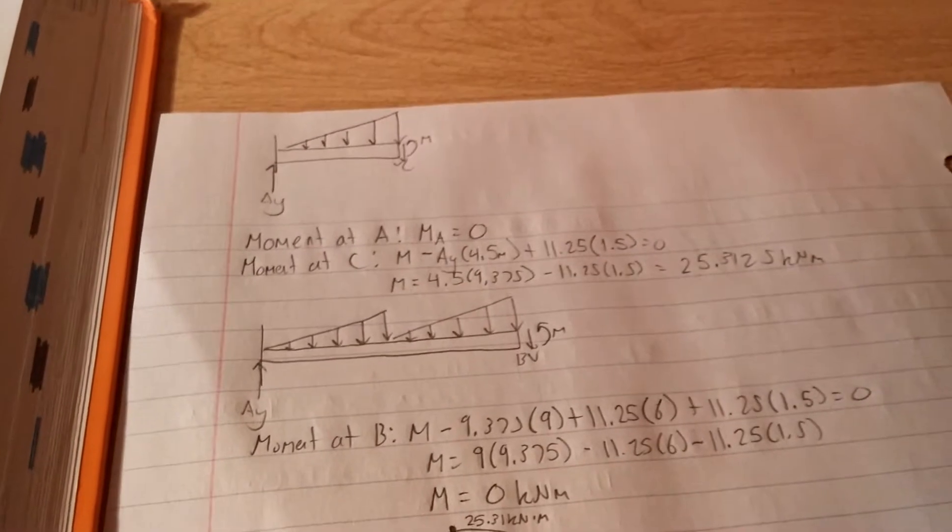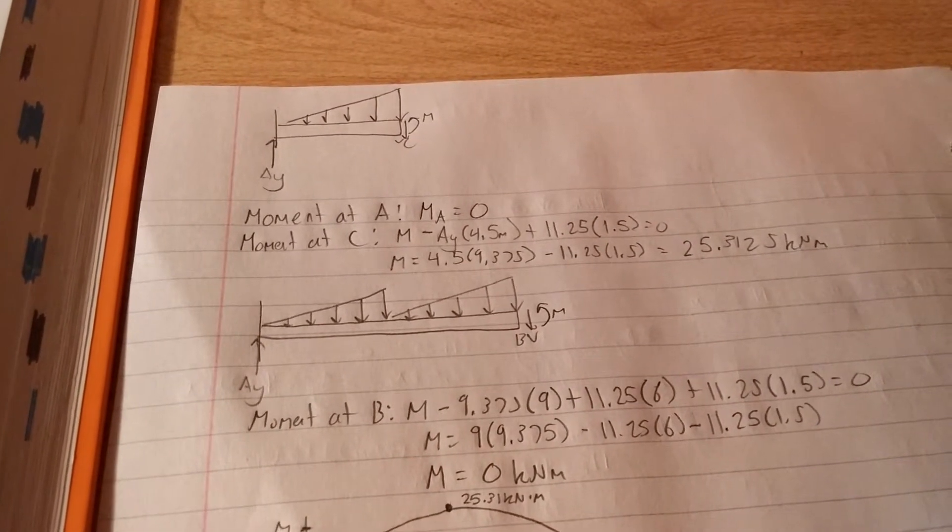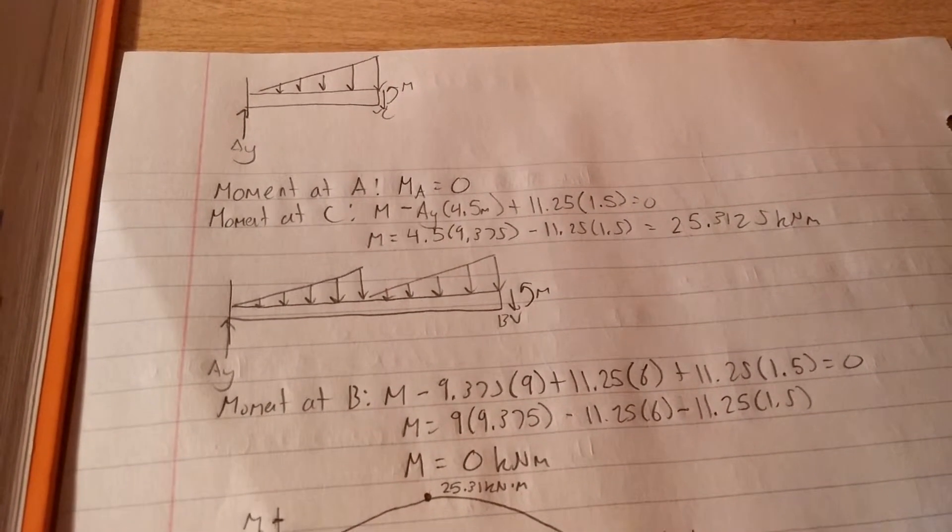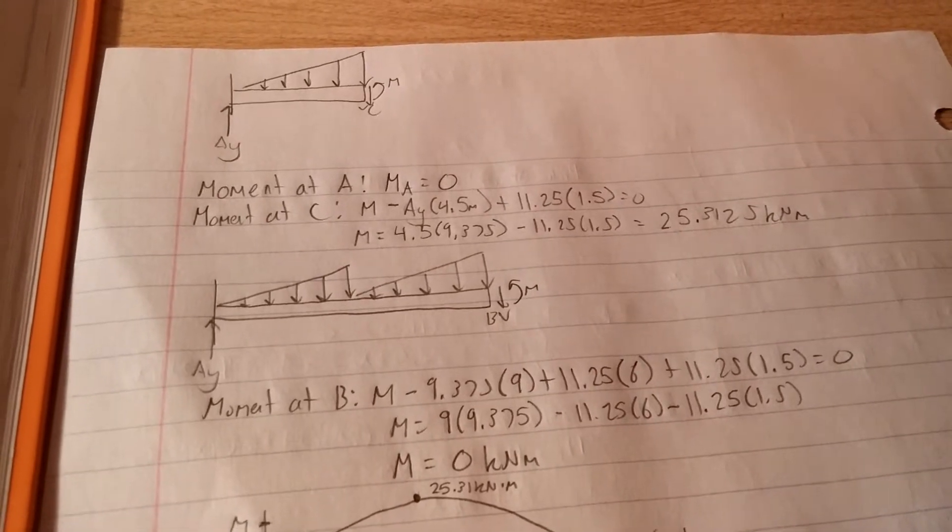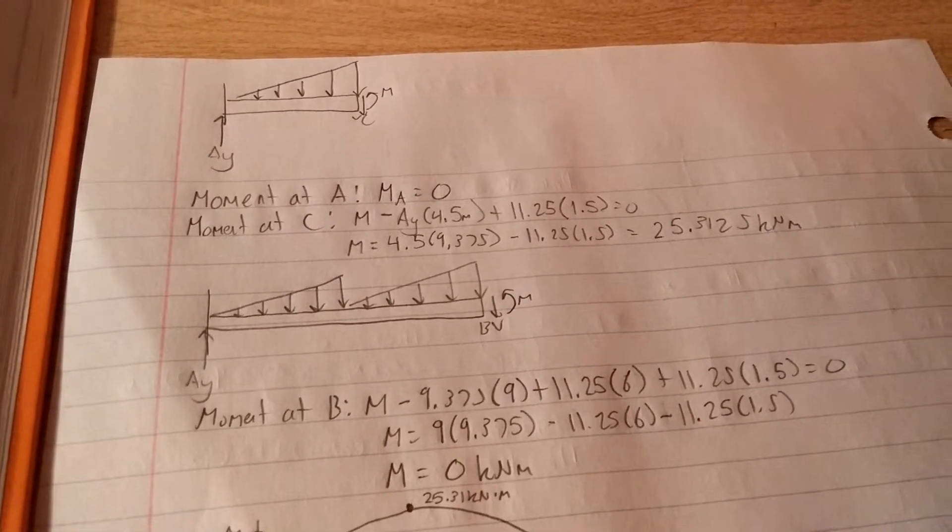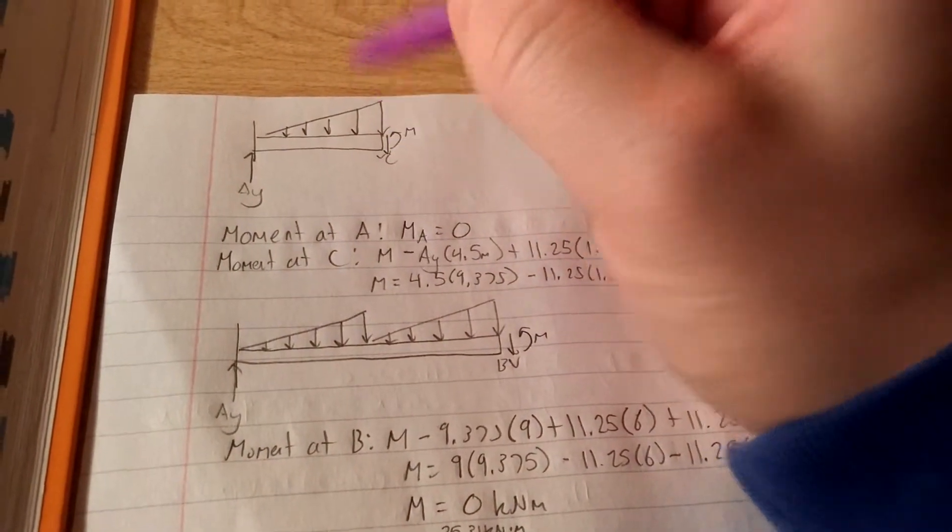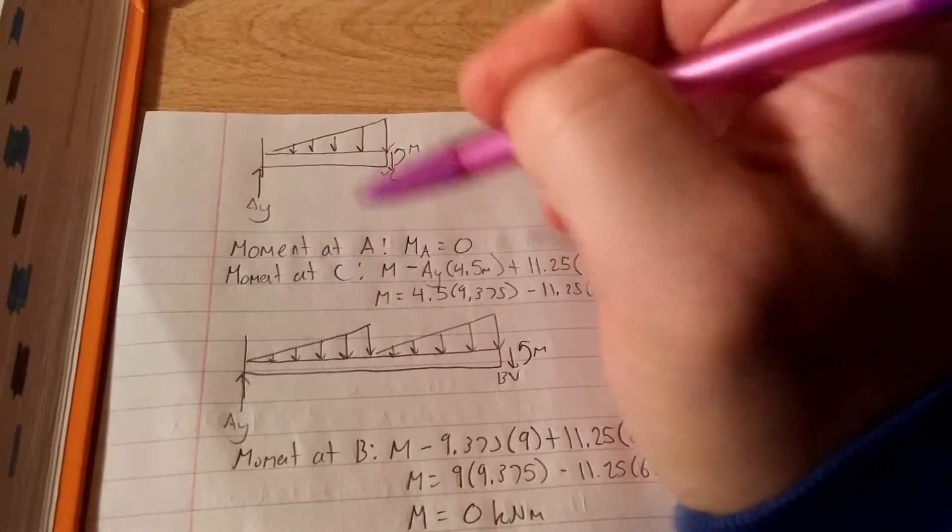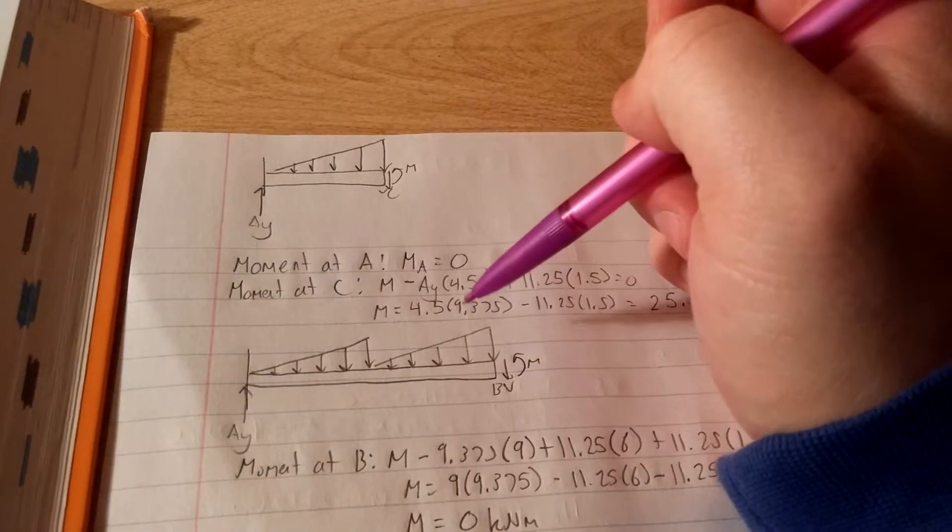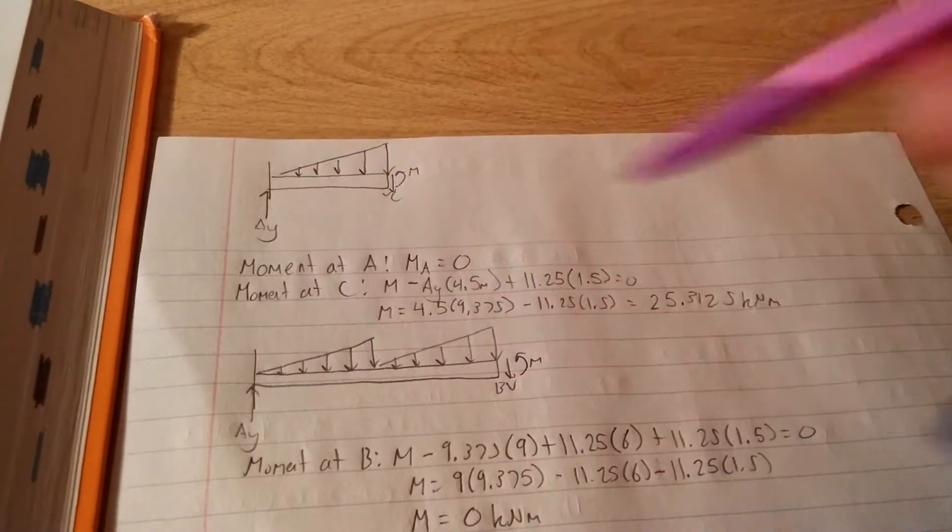Let's find the moment at C. Remember, that's the arbitrary point I picked in the middle. So we have the result moment. And if we look at this being our pivot point, AY is going to create a clockwise rotation. So that's negative, and that's 4.5 meters away.